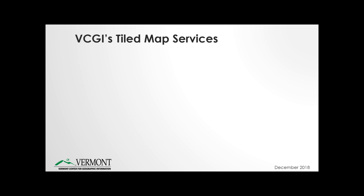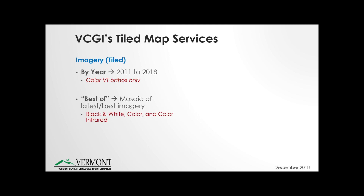Now I'm going to talk about VCGI's Tiled Map services and what we have to offer. We have a series of Tiled Map services produced with imagery — a series by year for color Vermont orthophotos, with a separate service for each acquisition year. We also have a series of what we call best-of, essentially mosaics of the latest best imagery, pre-tiled as raster caches, available in black and white, color, and color infrared.